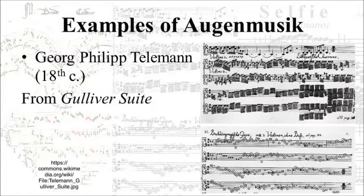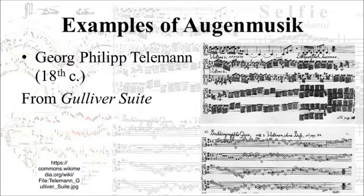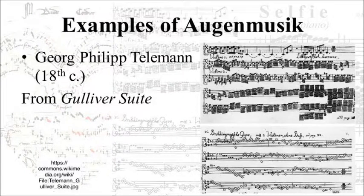Next is an 18th century example from the Gulliver Suite by Telemann — a programmatic suite inspired by Gulliver's Travels, first published within Telemann's lifetime. Specifically, this shows two movements: Telemann's interpretation of the Lilliputians, a society of tiny people about six inches tall, and the Brobdingnagians, a society of gigantic people about 70 feet tall. Respectively, Telemann characterizes these societies using ludicrously small and ludicrously large rhythmic note values. This I would categorize as structural Augenmusik, since the effect really does relate to the implied sonic structure of the music.